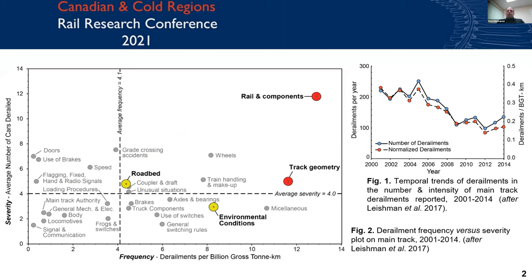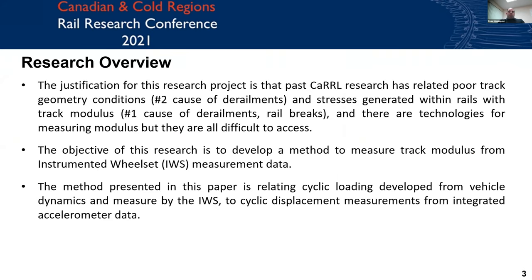Thanks to Daniel's presentation, you all saw this plot. The following plot visualizes the incident causes that pose the greatest risk to the rail industry. It shows that failure of rail and rail components and also track geometry are the most frequent causes of derailment. That is the justification for this research project. The last Canadian rail research laboratory has related poor track geometry conditions and stresses generated within rails with track modulus. There are technologies for measuring modulus, but they are all difficult to access.